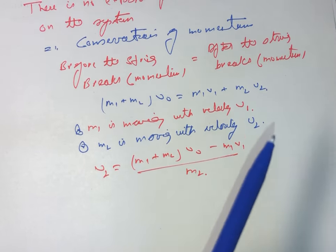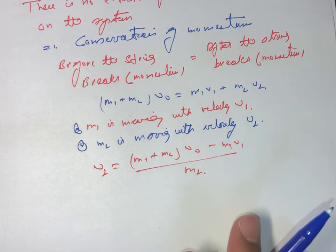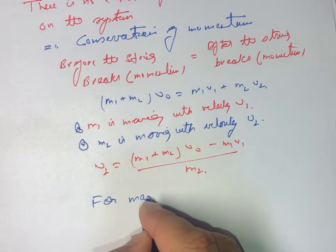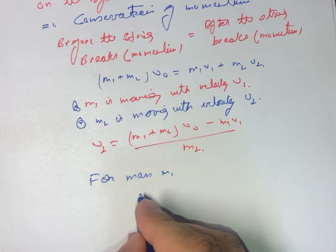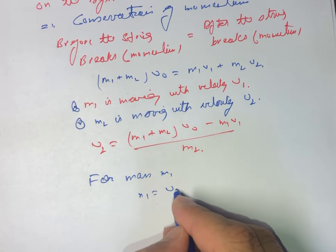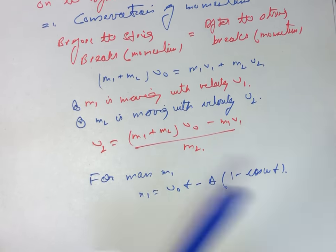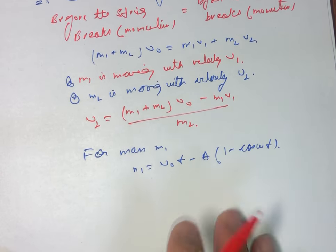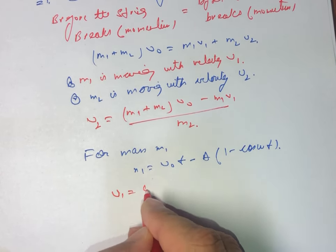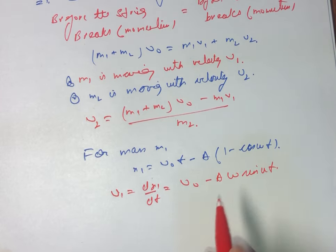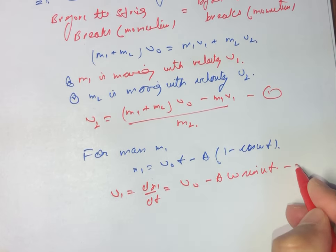It is given that the position of point mass m1 is x1 = v0·t - A(1 - cos ωt). We can find its velocity by differentiating this equation: v1 = dx1/dt = v0 - A·ω·sin(ωt). Let's call this equation number 2.